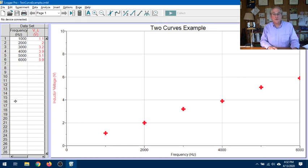There are two columns of data here. I've got frequency in one column and I've plotted that on the horizontal. I've got V sub L, the voltage of the induction coil in the other and I've just typed in some fake data here.